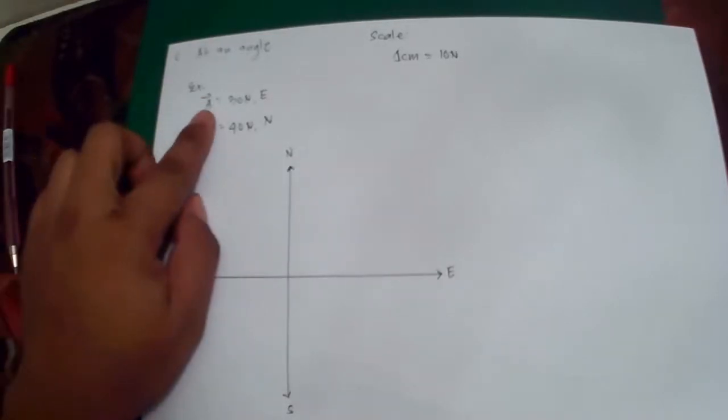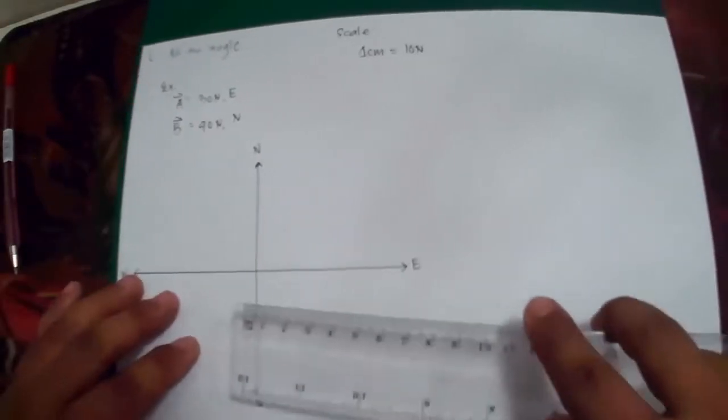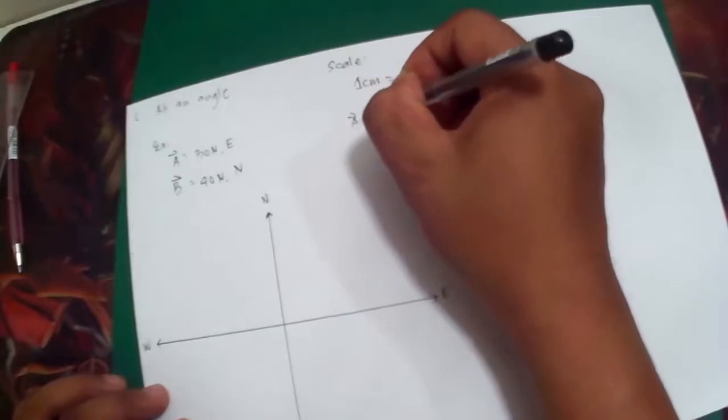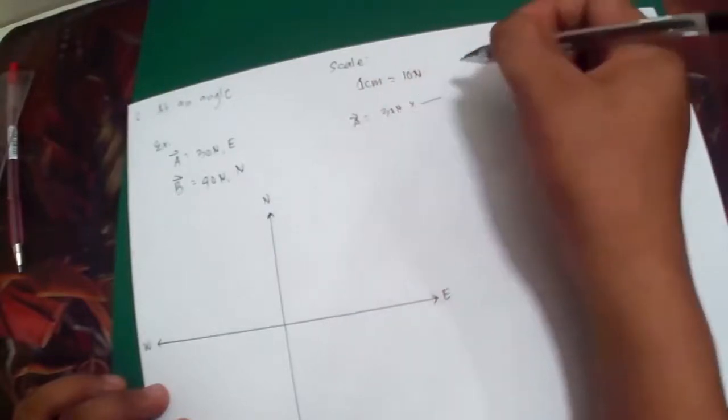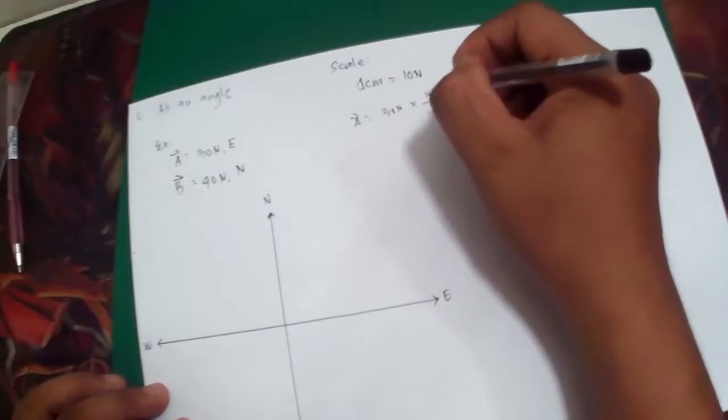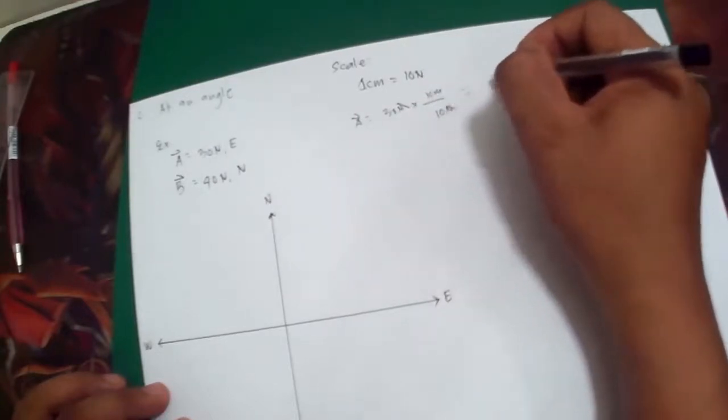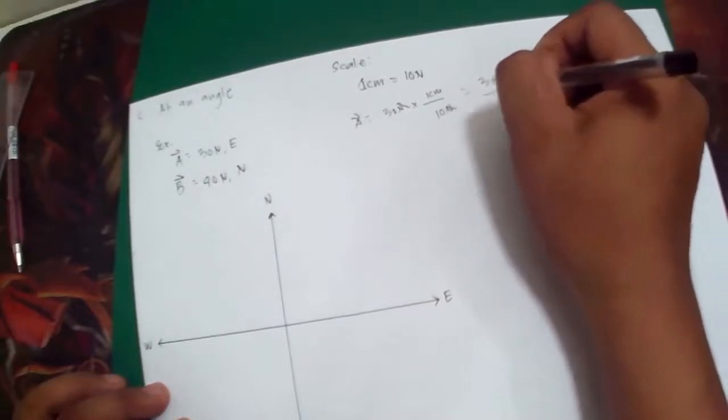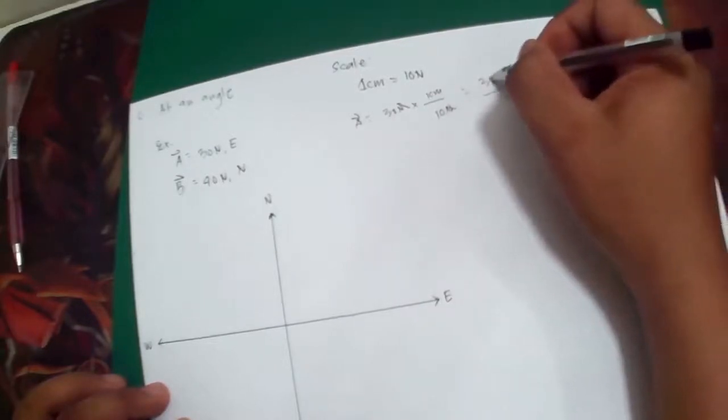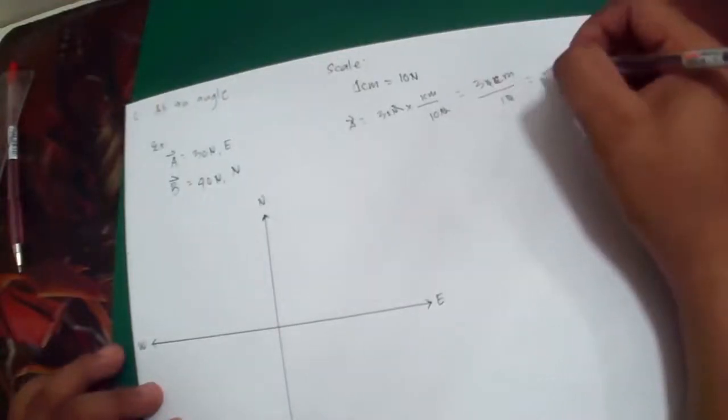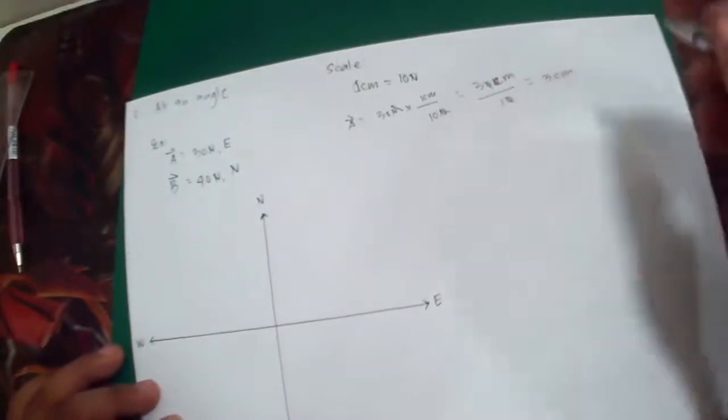First, let us have the graph. Vector A is 30 N east. Again, vector A equals 30 N times, in every 1 cm we have 10 N. Cancel out. This will give you 30 centimeters over 10. Cancel out, that would give you 3 centimeters.